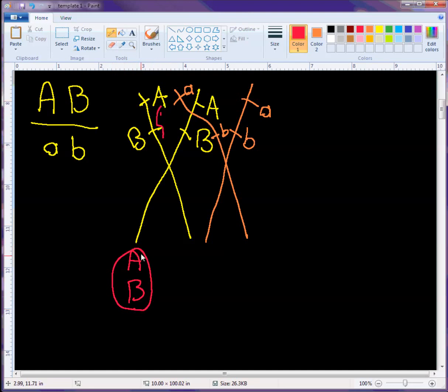And then we have a crossing over happening here so little a is going to go with big B, and here big A is going to go with little b.